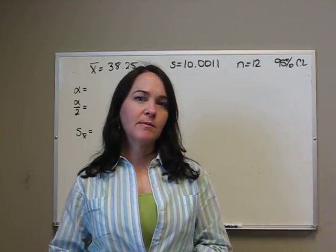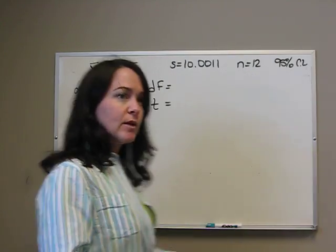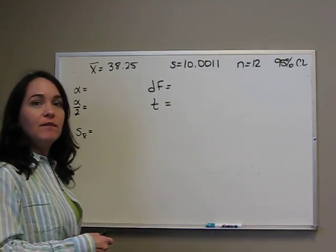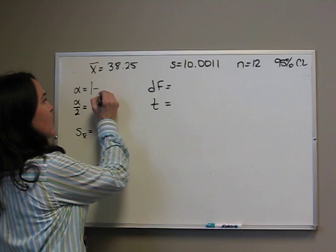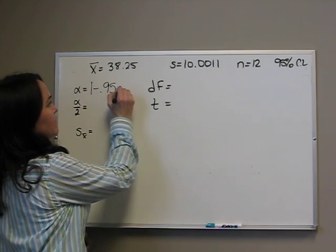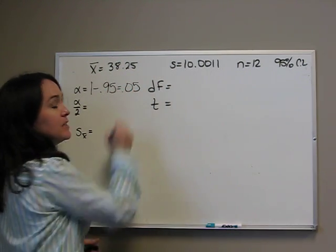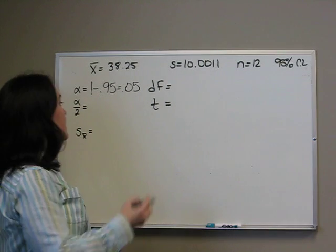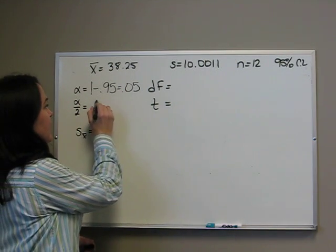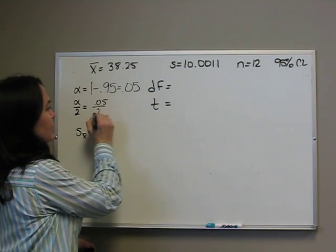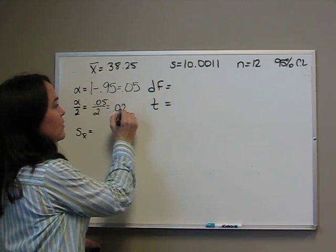It's the same basic steps as for z. First, we find alpha. Alpha is 1 minus our confidence level. In this case, it's 0.05. Then we divide that by 2 to get 0.025.